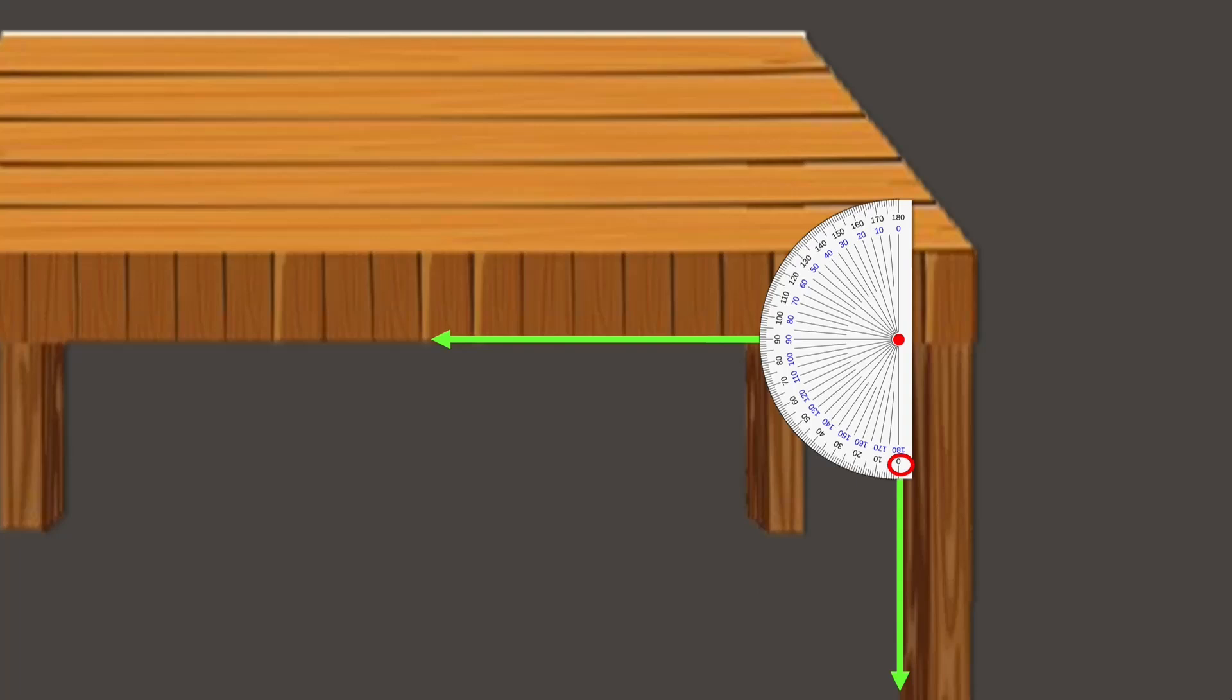Here, I am using the outer scale. We can see the other arm is pointed at 90, which proves that it is indeed a 90 degree angle.